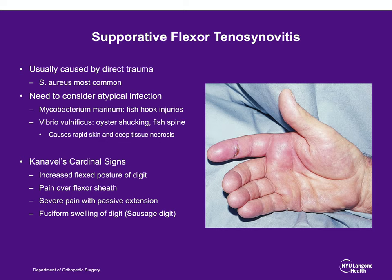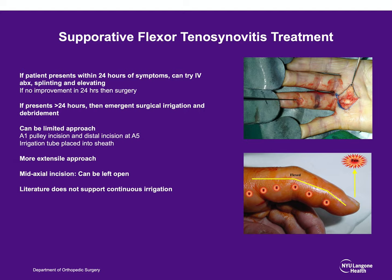The classic signs are Kanavel's cardinal signs, which include an increased flexed posture of the digit, pain over the flexor sheath, severe pain with passive extension, and the sausage digit — also known as fusiform swelling. If a patient presents within 24 hours of becoming symptomatic, which is rare, you can try IV antibiotics, splinting, and elevation. However, if there is no improvement within 24 hours, surgery is indicated. If they present greater than 24 hours from symptoms, then emergent surgical irrigation and debridement should be performed.